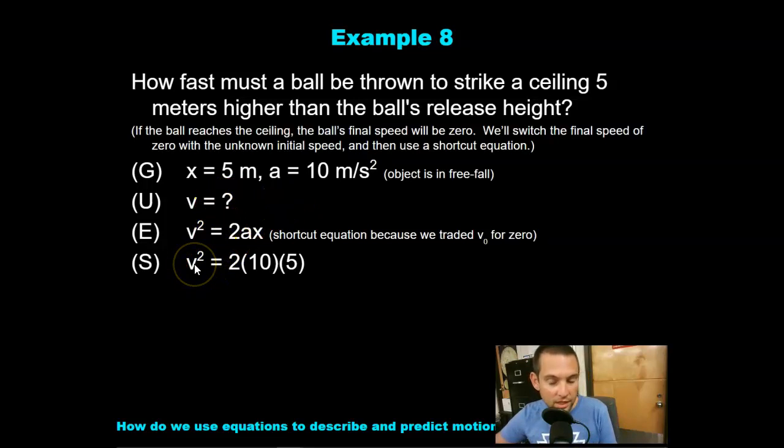So we have final velocity squared equals 2ax. The good thing about using this is it's already solved for the variable, so we don't have to do any extra algebra steps. I know we hate those. And they are sources of error, for sure.